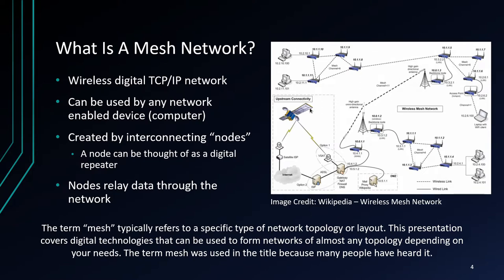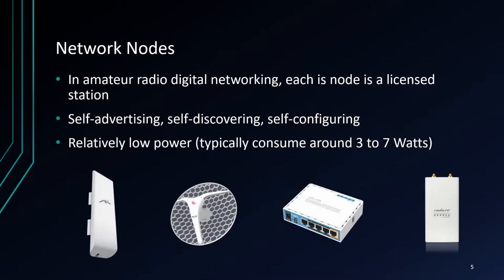A true mesh layout isn't always the best topology to use. Now that I've mentioned nodes, let's talk about what a node is. In Amateur Radio Digital Networking, a node is an individual wireless station. Each node must be licensed using an operator's call sign and have a unique name. Mesh network nodes are self-advertising, self-discovering, and self-configuring — if two nodes are in range of each other, they will automatically connect and form a network. Most nodes consume very little power, with many devices using as little as 3 to 7 watts.